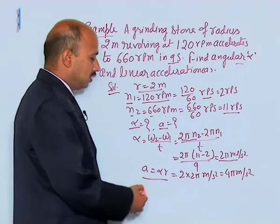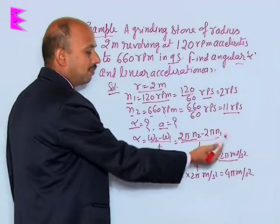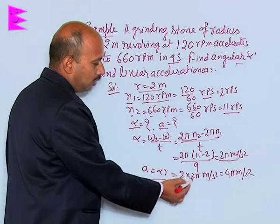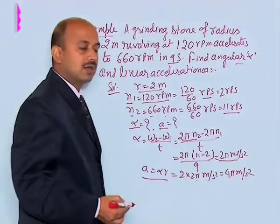Now, a is equal to alpha r. Alpha we have calculated, so 2 into 2 pi that is 4 pi meter per second square.